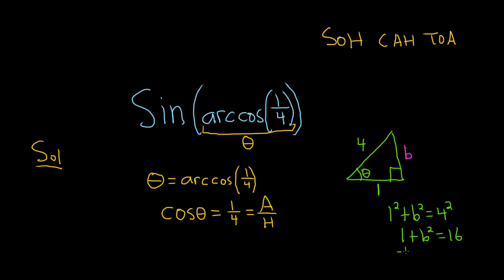Then you can subtract 1 from both sides. So we end up with b squared equals 15. Taking the square root of both sides, we do get a plus or minus. But we only want the plus because b is the length of the side of a triangle. So it can't be negative. So b is equal to the square root of 15.